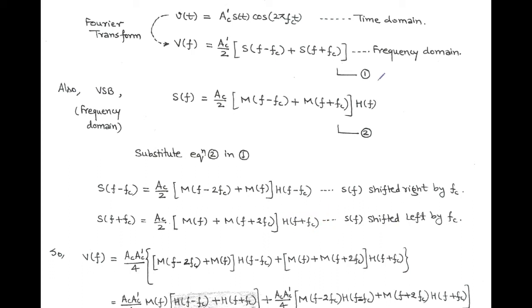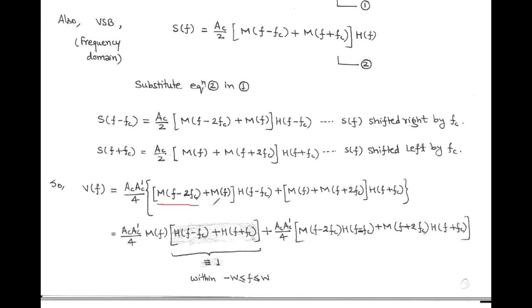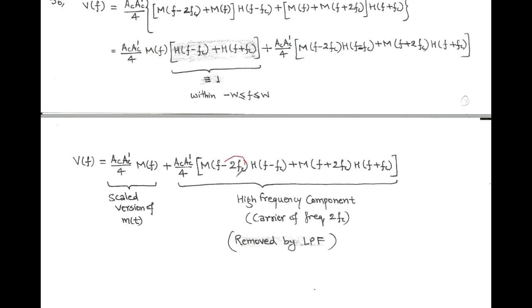Now, substituting the values of S(F - Fc) and S(F + Fc) into equation 1, we get AC·AC' upon 4 within bracket [M(F - 2Fc) + M(F)] into H(F - Fc) plus [M(F) + M(F + 2Fc)] into H(F + Fc). After rearrangement, we get two terms. The first term has M(F) as a common factor multiplied by [H(F - Fc) + H(F + Fc)], which equals 1 according to the property of the sideband shaping filter within frequency range minus W to W. The second term corresponds to higher frequency components, which are unwanted and can be removed by using a low pass filter.